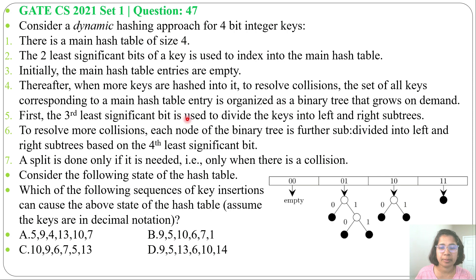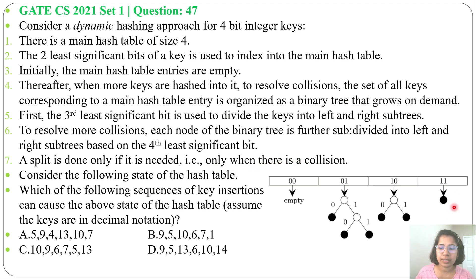The third least significant bit is used to divide the key into left and right subtree. To resolve more collision, each node of the binary tree is further subdivided into left and right subtree based on the fourth least significant bit. A split is done only if needed — only when there is a collision. If there is no collision, then no split. For example, multiple keys stored at the same slot cause a split, but a single key requires no split.